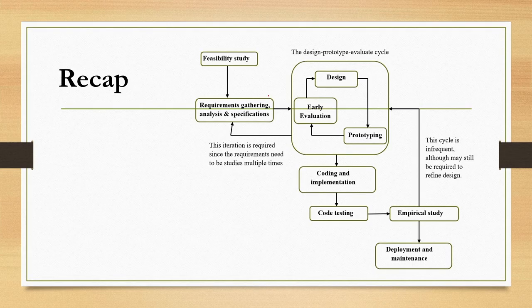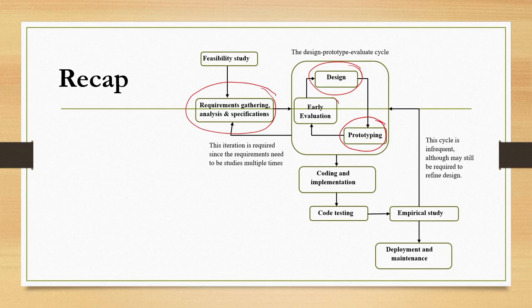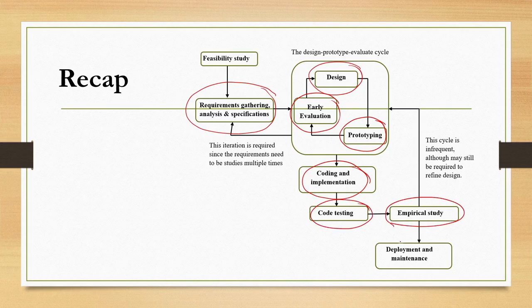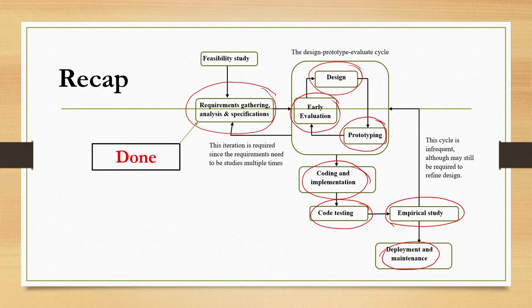In the life cycle there are several stages: requirement gathering, analysis and specification stage; then design, prototyping and evaluation cycle; coding and implementation stage; code testing stage; empirical study stage; and deployment and maintenance stage. There are cycles between the stages as shown in the diagram. Among these, we have so far covered the requirement gathering, analysis and specification stage, and we have covered the design stage.